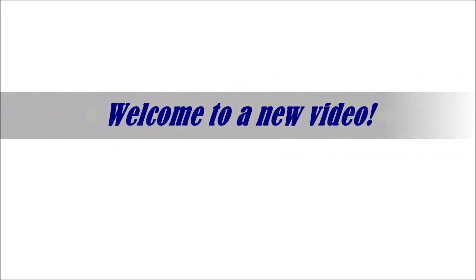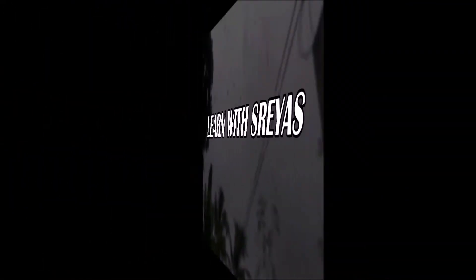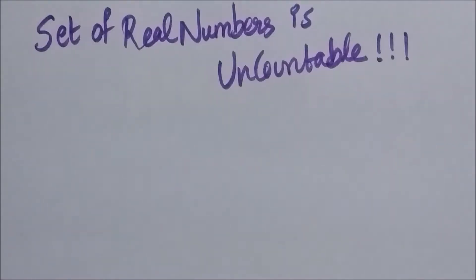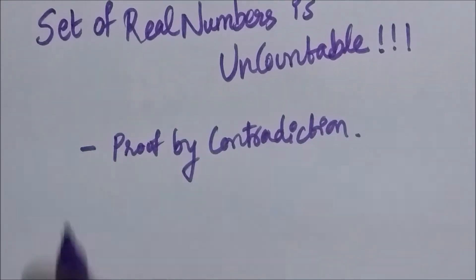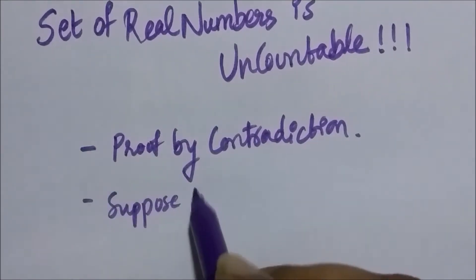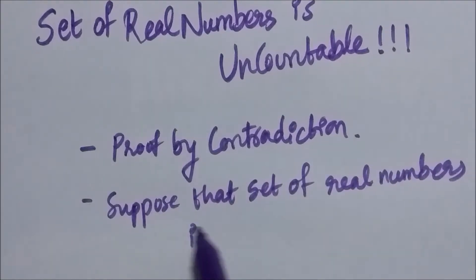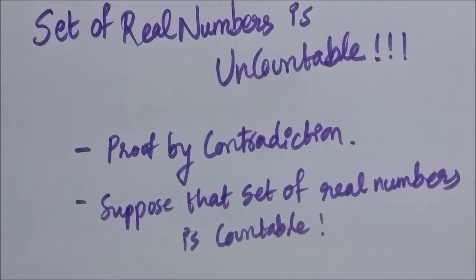Hello friends and welcome to a new video. So far we have seen many examples for a countable set. So do we have a promising candidate for an uncountable set? Yes — the set of real numbers is an uncountable set. We use proof by contradiction to prove this: we suppose that the set of real numbers is not uncountable but is countable.